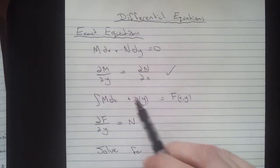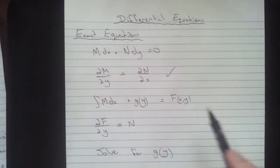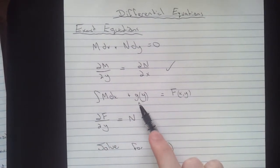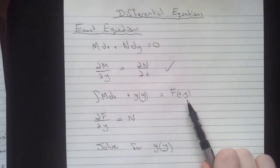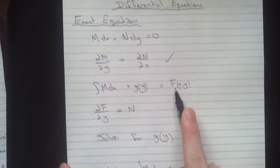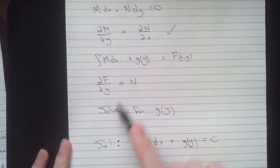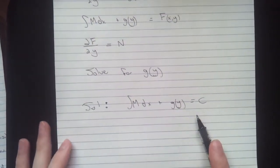Alright, so let's run through that again. You're going to check for exactness. Take ∂M/∂y, ∂N/∂x. If they're equal, you're good. You're going to integrate M dx and add a separate term, g of y. Set that equal to F, capital F of x and y. You're going to take the derivative of capital F with respect to y. Set that equal to N. That's this N. And then you're going to solve for g of y. Then you find a solution that just looks like that.